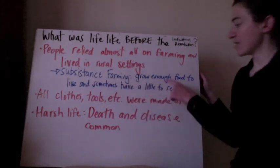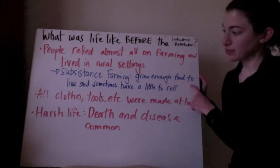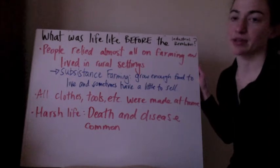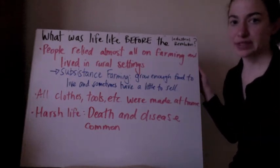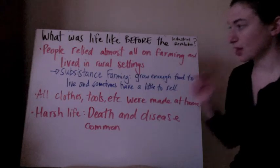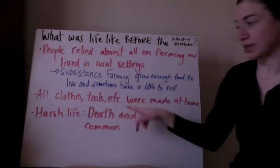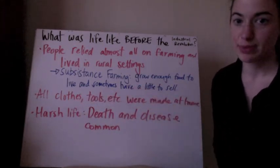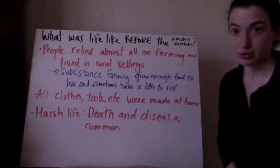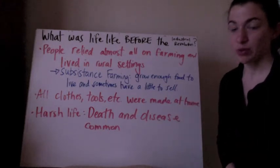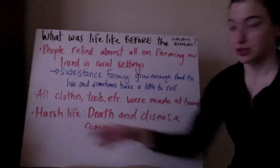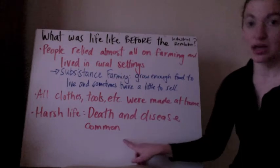With subsistence farming, you grow enough food to live and sometimes a little to sell, but it's not how you make your living — you basically farm and plant for yourself. All clothes, tools, and other items were made at home. People made their own clothes and their own tools — whatever they needed, they made themselves. Life was harsh; there was a lot of death and disease, which was common.